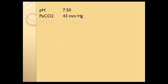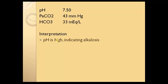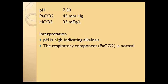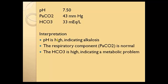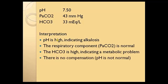Looking at the next values: the pH is high, indicating an alkalosis. The respiratory component, the PaCO2, is normal. But the bicarb is high — this indicates a metabolic problem. There is no compensation; the pH is not normal. So we can interpret this as an uncompensated metabolic alkalosis.